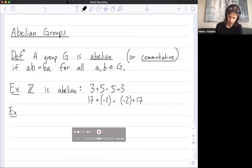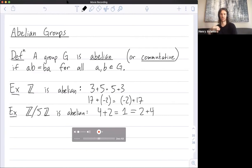So another example is the integers mod 5, or really mod any Z mod nZ for any n, this is abelian. So let's do 4 plus 2, that's equal to 6, but mod 5 that's equal to 1, which is the same as 2 plus 4, which is 6 or 1 mod 5.